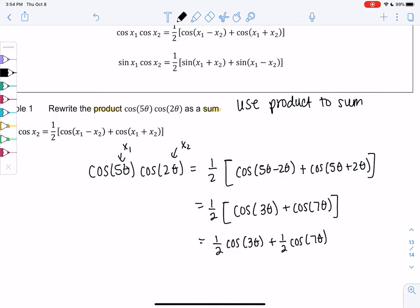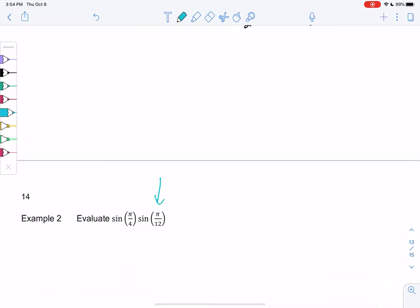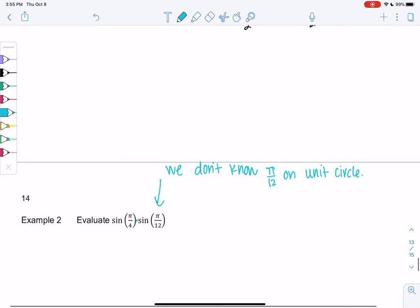Another thing we might use this for is when we have angles we don't know on the unit circle. In this next example, we don't know π/12 on the unit circle. So maybe if we rewrite a product, right? It's currently a product. Maybe if we rewrite it as a sum, maybe we'll get better angles.